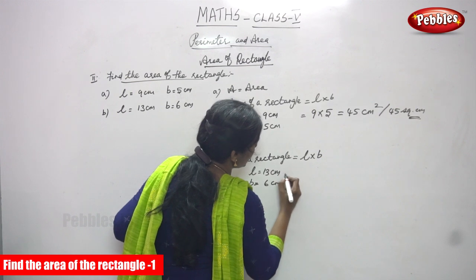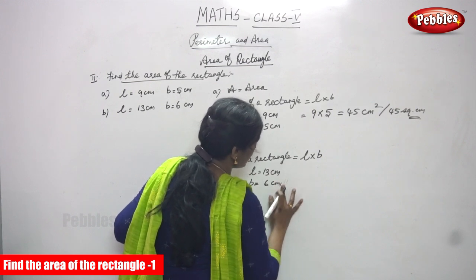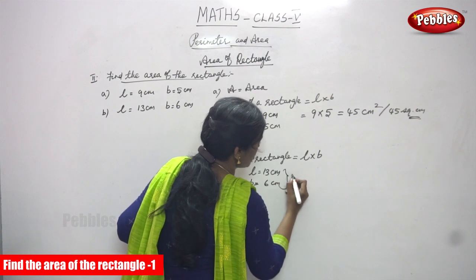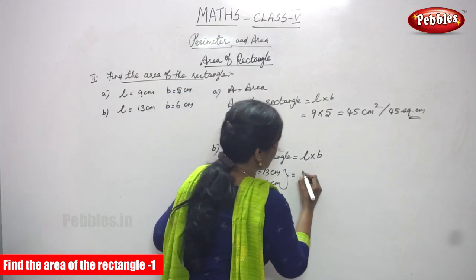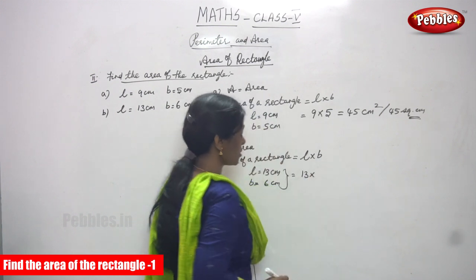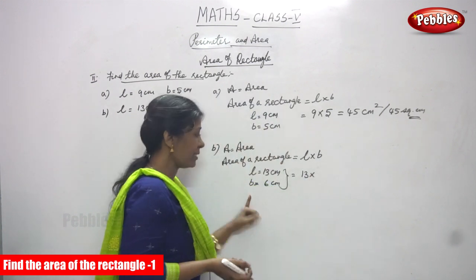So now you're going to substitute the value of L and B. L means length, I've told you. So 13, and B means breadth. So write the value of B that is 6.